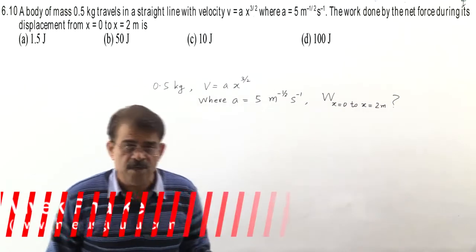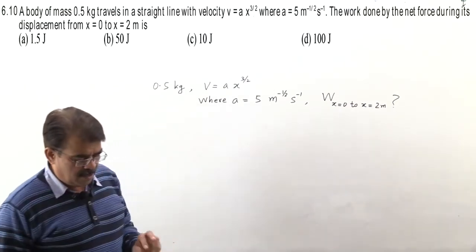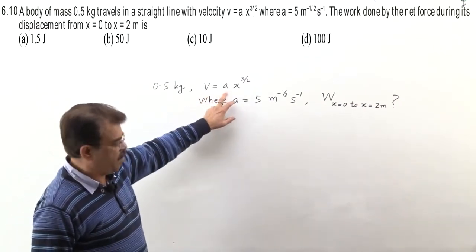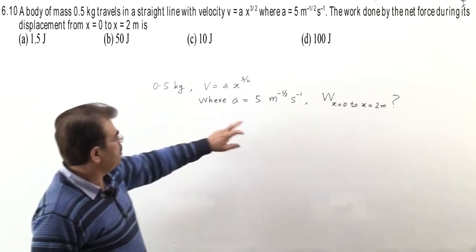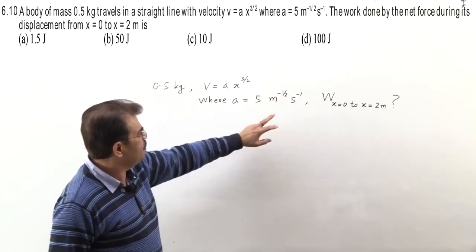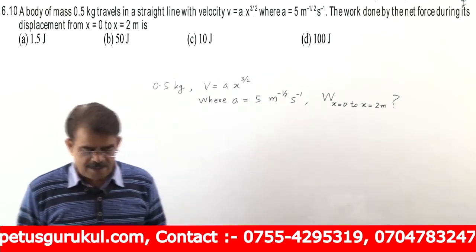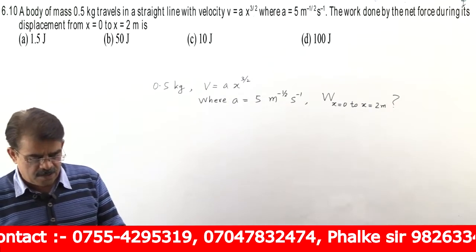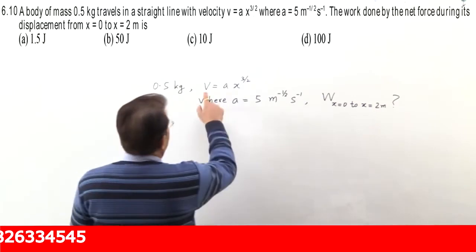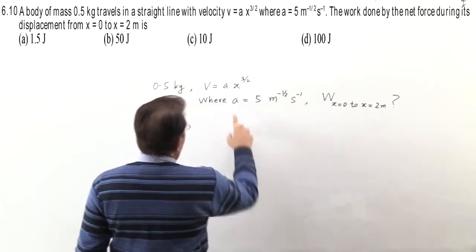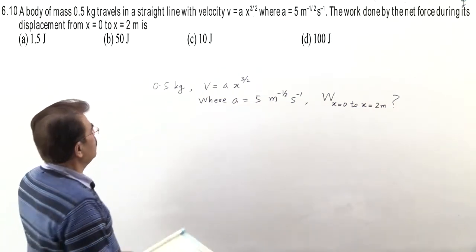The next problem is 6.10. A body of mass 0.5 kg travels in a straight line with velocity v equals a x raised to the power 3/2, where a is 5 meter raised to the power minus half second power minus 1. The work done by the net force during its displacement from x equals 0 to x equals 2 meter is. So this velocity is the function of position and this a is confused - a is not acceleration, it is constant.